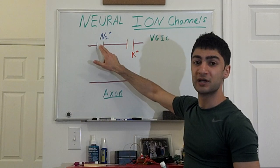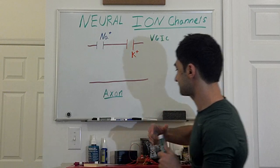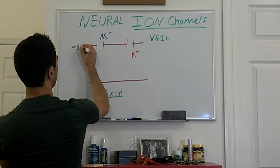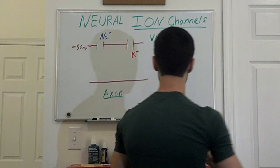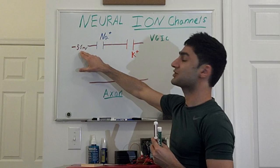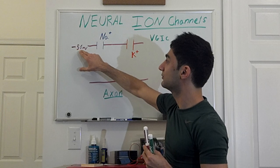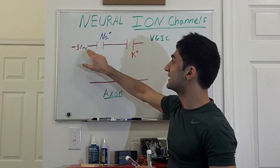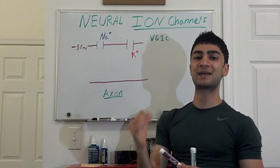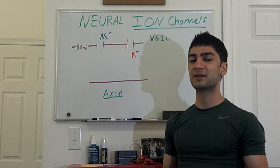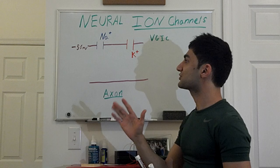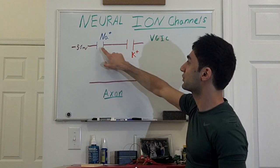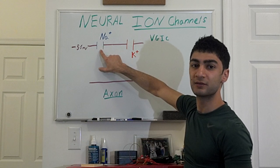More specifically, it causes the sodium channel to open. At a normal cell, the resting potential is going to be somewhere around negative 50 millivolts within the cell. Outside the cell it's usually a lot more positive. What happens during an action potential is that the cell membrane's voltage gets raised past a certain threshold — it depends on the cell type, but it's usually somewhere around negative 20 millivolts. But once that threshold is reached, it's going to trigger this sodium ion channel.